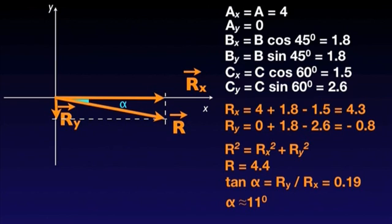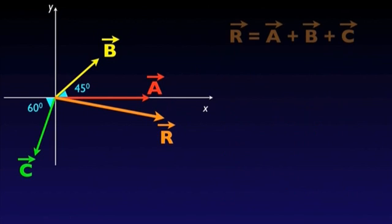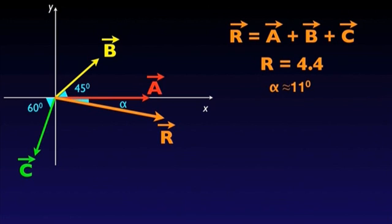All our results were calculated to two significant digits since the data used was given with two significant figures. The final answer to the original question is the resultant vector has a magnitude of 4.4. The unit is not relevant here and, as shown on the screen, its direction is along a line that makes an angle of 11 degrees with a horizontal axis.